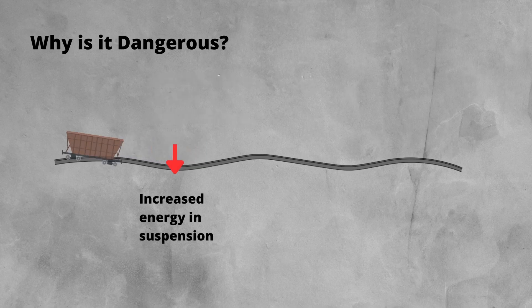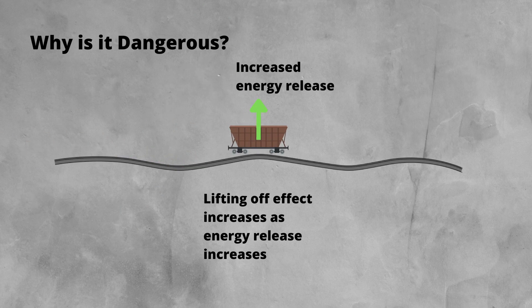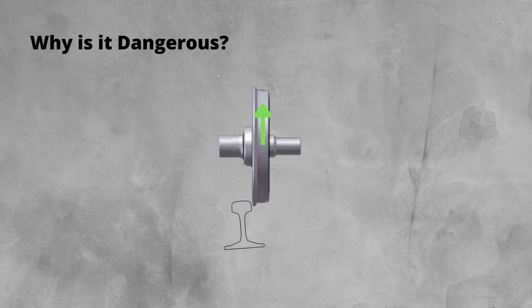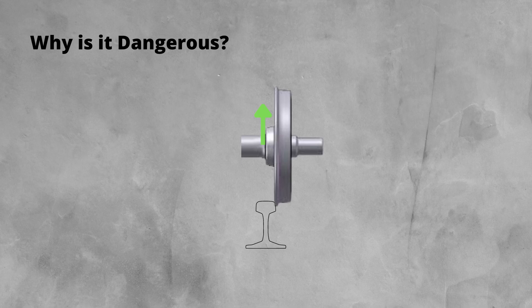The regular dips continue the process, gradually increasing the store of energy in the suspension. This in turn increases the liftoff effect when the energy is released, until the liftoff is high enough for the wheel and its flange to jump the rail and derail the wagon. The risk of derailment is further increased if there's another track geometry fault within the cyclic top area, such as twist or alignment.